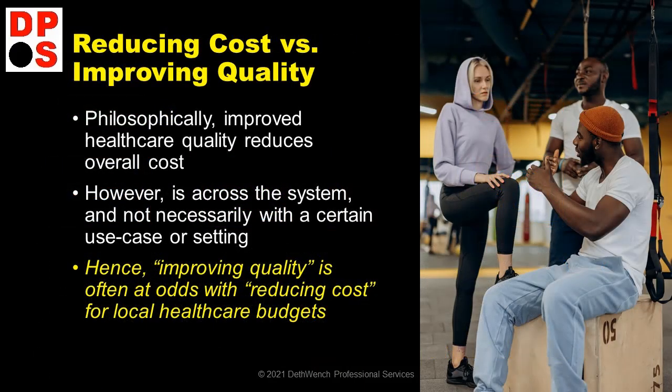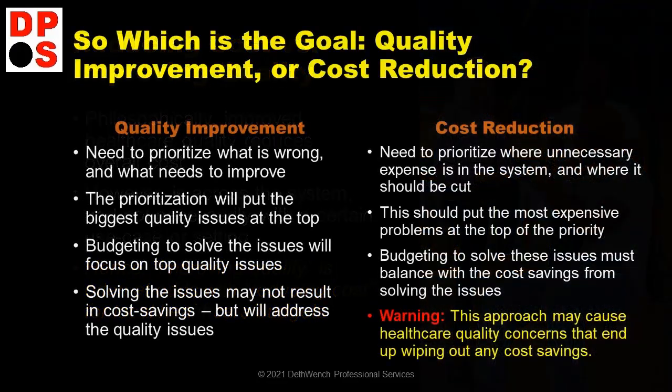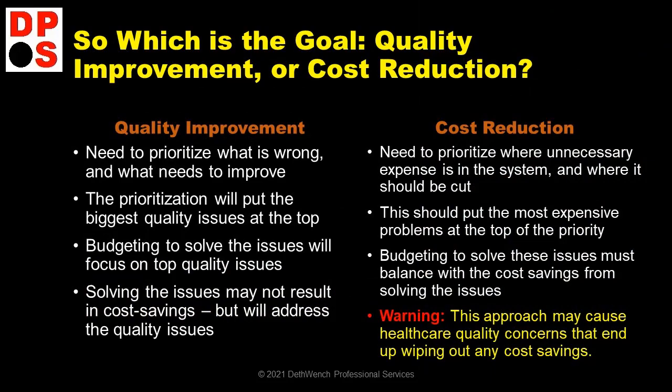Philosophically, improved healthcare quality reduces overall costs — as I just demonstrated — but it's across the system. We need to stop using KPIs about costs. If your department is going to do something to improve quality, it's going to cost money. If we focus on cost reduction, the approach may cause healthcare quality concerns that in the end wipe out any cost savings. We need to prioritize what is wrong in healthcare and improve it. Prioritize the most problematic issues and try to reduce those.